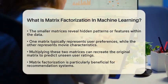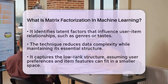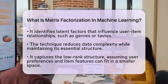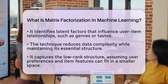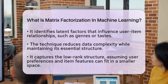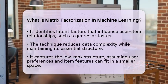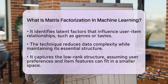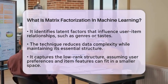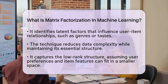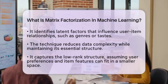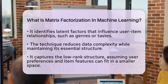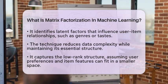these hidden features might relate to specific movie genres or user tastes, even though they are not explicitly defined. From a measurement and data perspective, matrix factorization reduces the complexity of data while keeping its essential structure intact. It captures the low-rank structure of the data, which assumes that user preferences and item features can be represented in a smaller space.